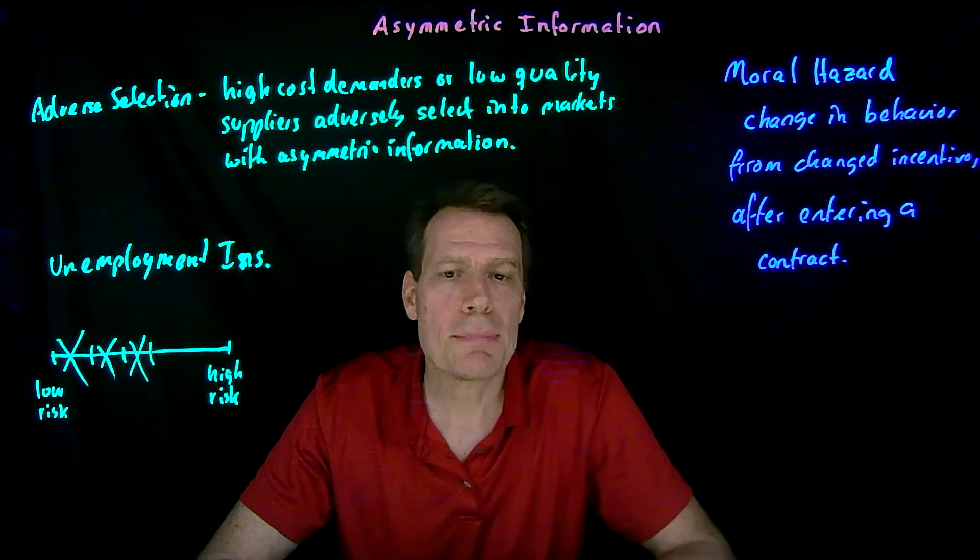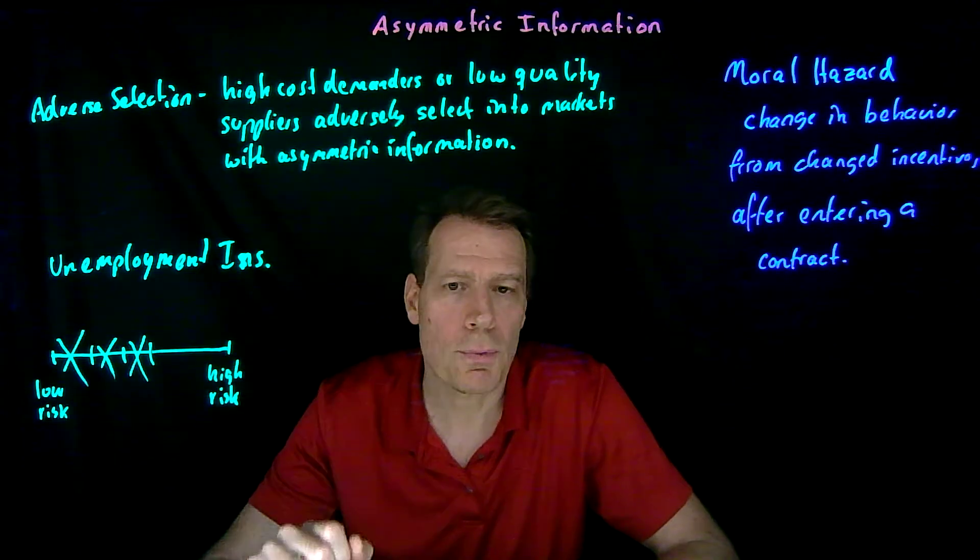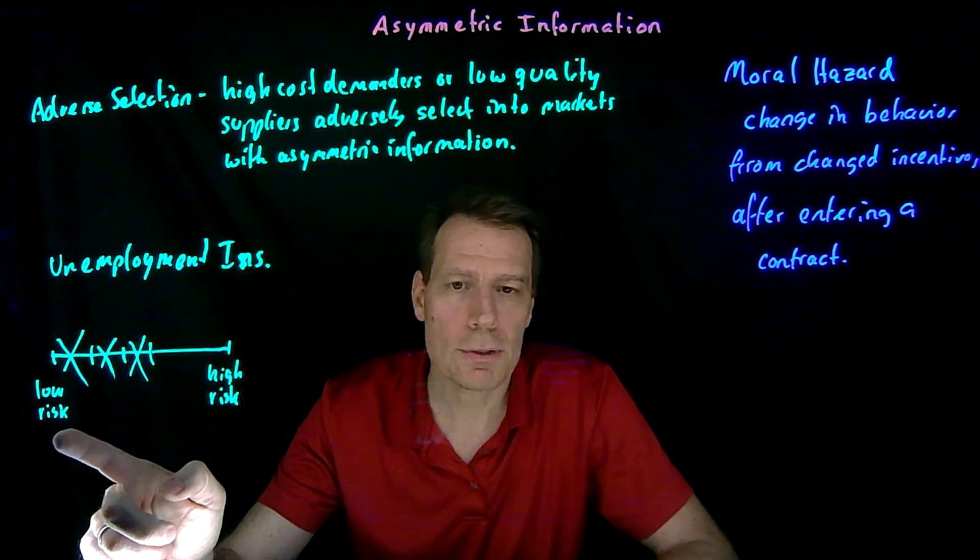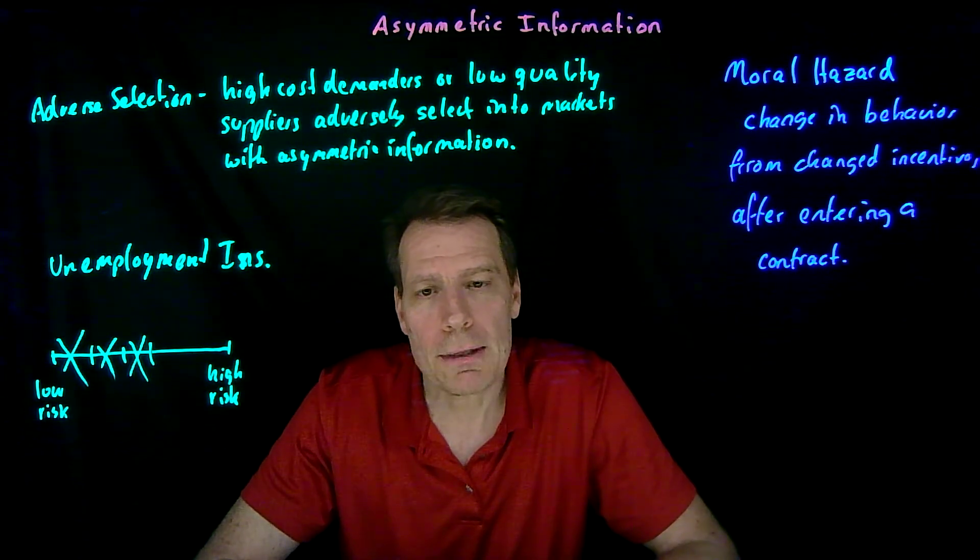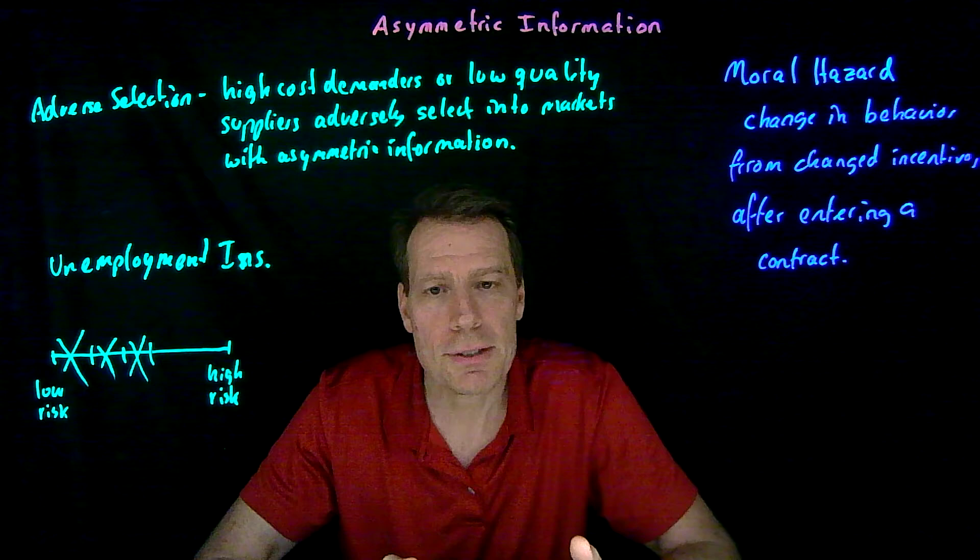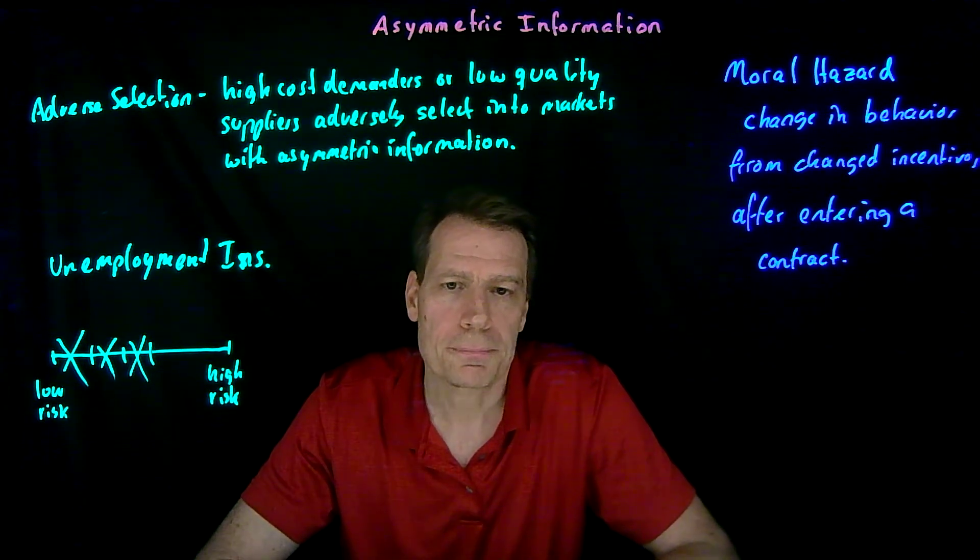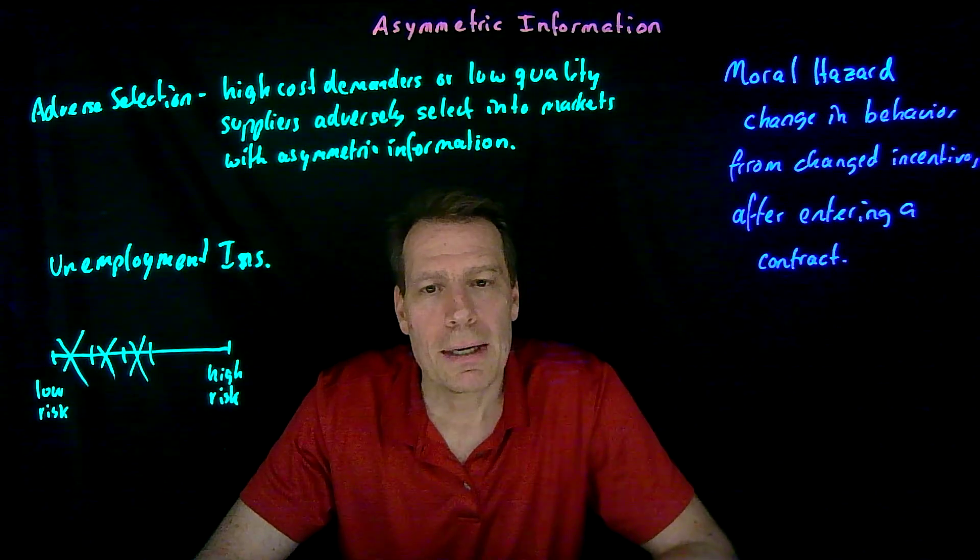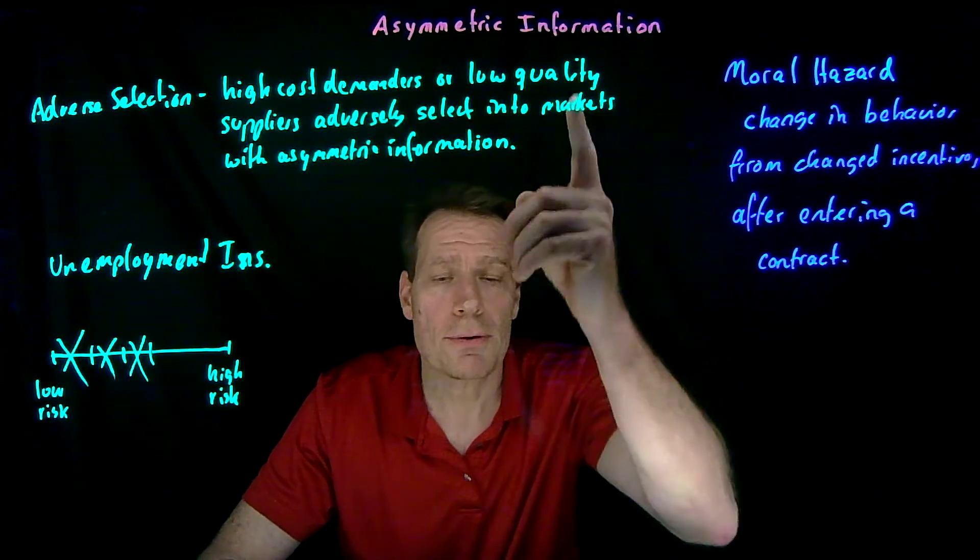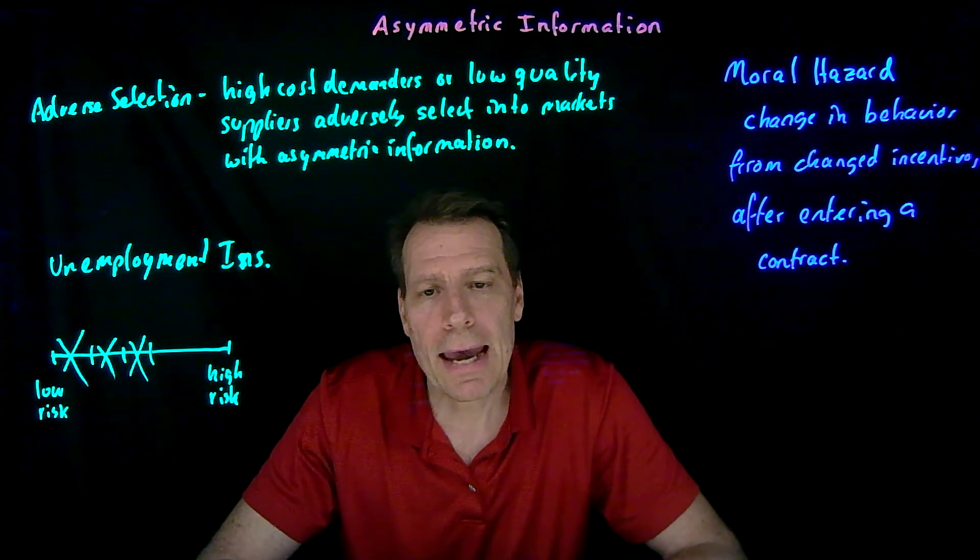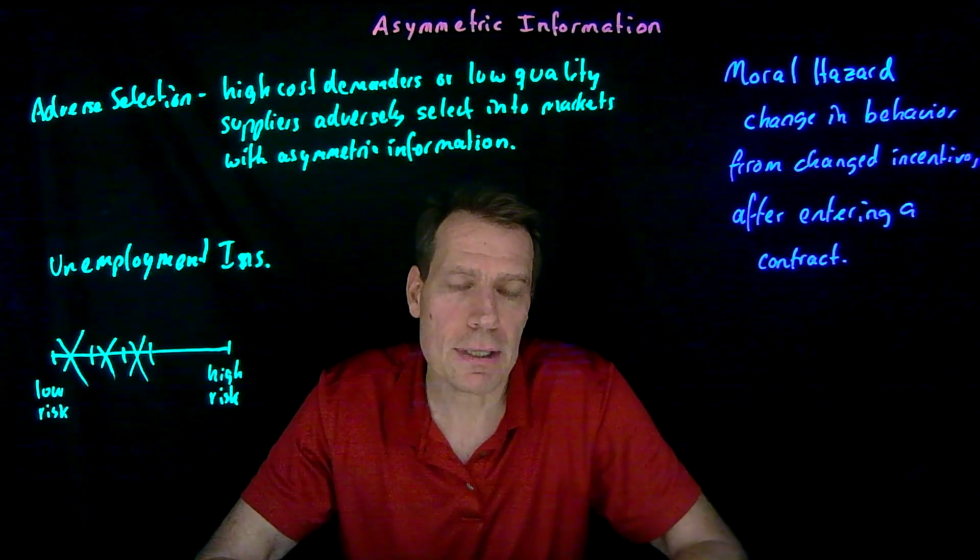There's now an even bigger adverse selection problem because not only does the unemployment insurance company have to worry about whether you're at high risk or low risk of losing your job because of the type of job you have, but are you also the kind of person who's going to succumb to moral hazard and become even higher risk as soon as you've entered an insurance contract. So moral hazard is a second issue that emerges in environments with asymmetric information, and it can add to that asymmetric information and thus aggravate the adverse selection problem.